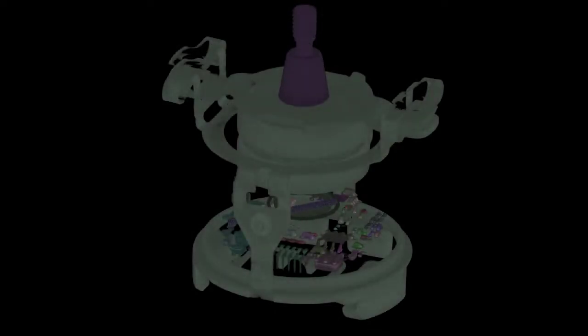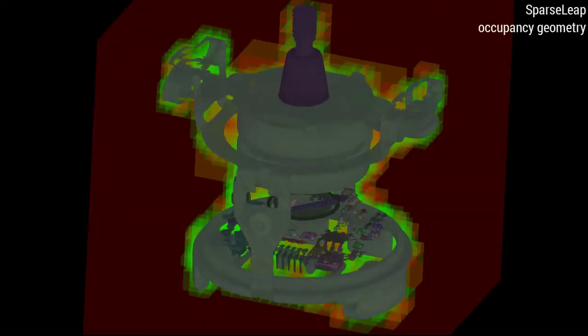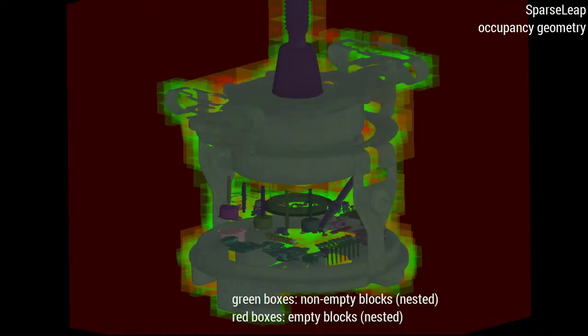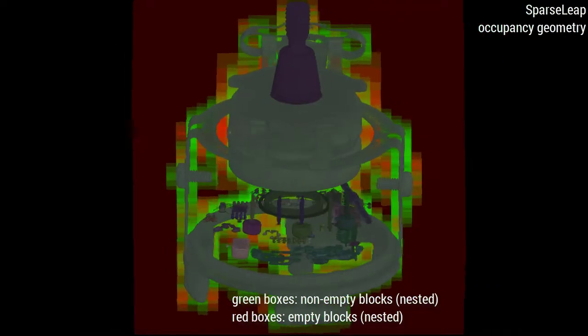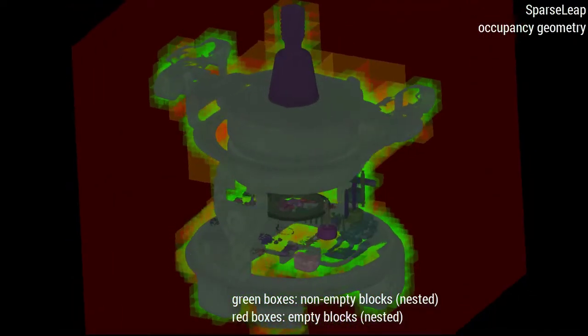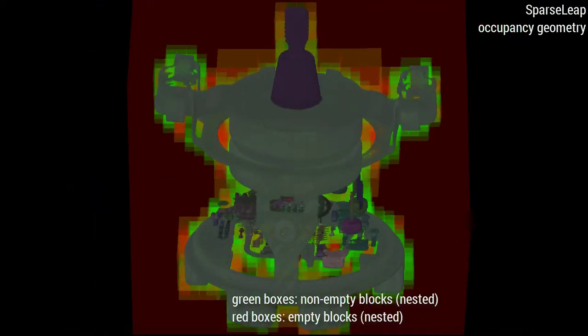Next, we show the occupancy geometry in 3D, where green boxes are non-empty blocks and red boxes are empty blocks. Note that in contrast to standard approaches, a big empty box such as the red bounding box of the entire volume can contain many small non-empty boxes.